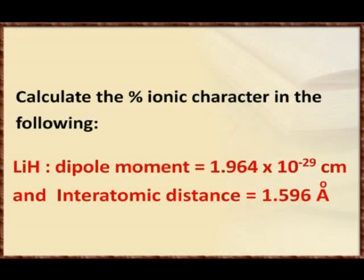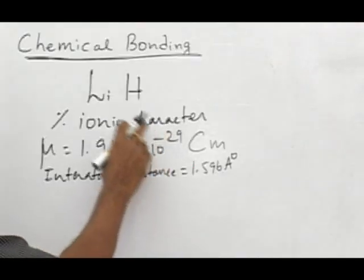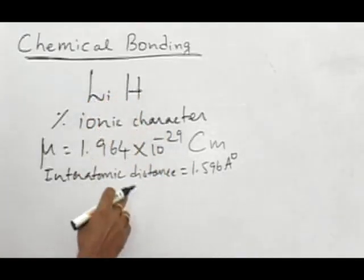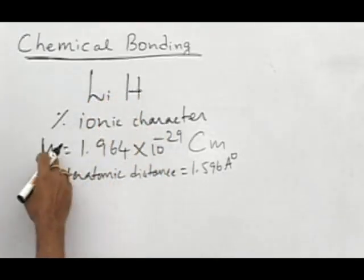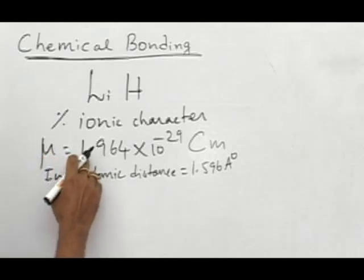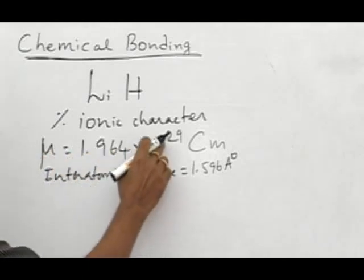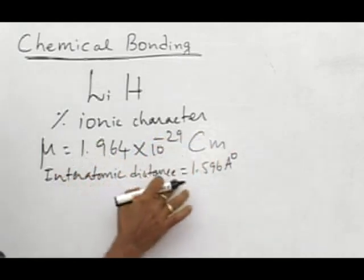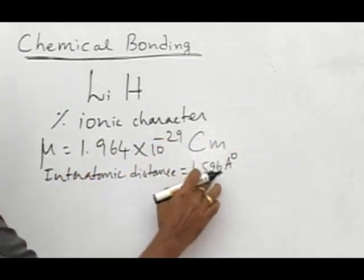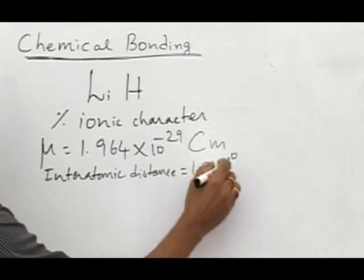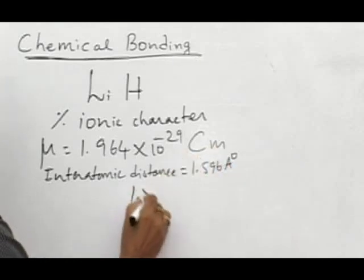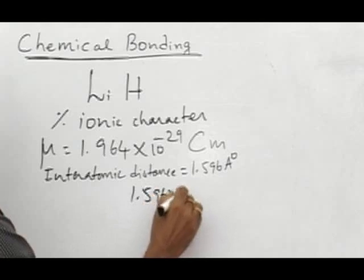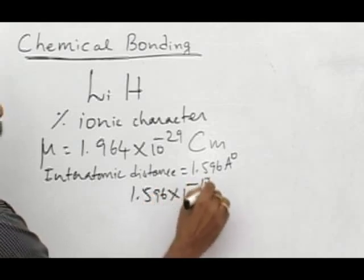Next, we are going to calculate the percentage ionic character in lithium hydride. Given data: dipole moment is equal to 1.964 × 10^-29 coulomb meter and the interatomic distance being 1.596 angstrom unit. This we have to convert into SI unit: 1.596 × 10^-10 meter.